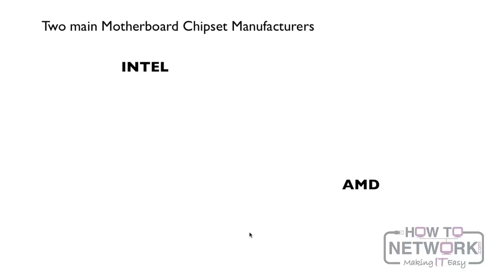You see Sony on some and Samsung on others, but what this means is they've come up with the chipset — the architecture of these motherboards and CPUs. So it's important to recognize these two.